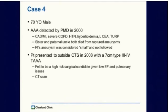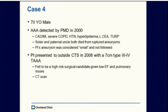So this is the fourth case of the day. It's a 70-year-old who had an aneurysm that was followed for a while since 2000, has some coronary artery disease, bad COPD — which was really the deterrent from any sort of open procedure back in 2000 — but has a very strong family history of aneurysms and ruptured aneurysms. The patient's aneurysm was considered small at that point, and then presented to an outside hospital with a 7-centimeter aneurysm. It was felt to be a high-risk surgical candidate.